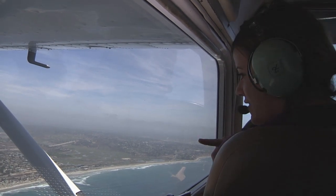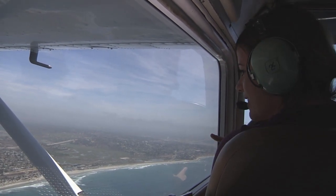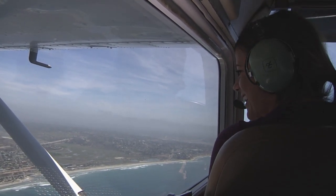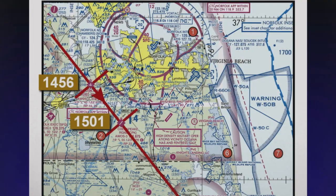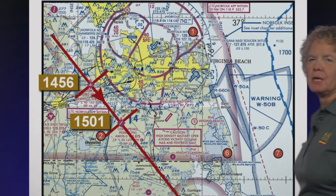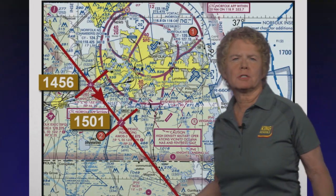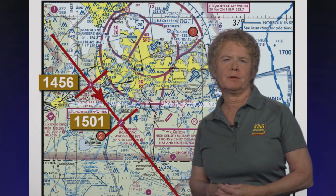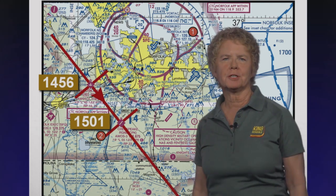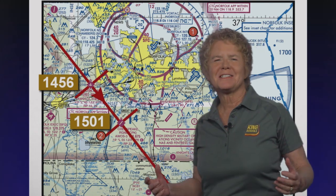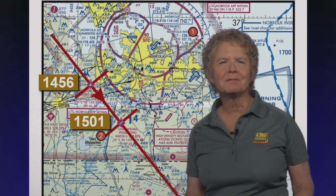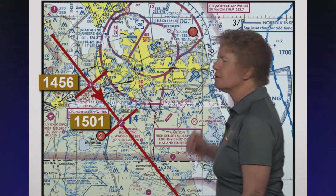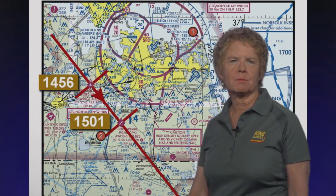This airplane sure looks like it's on a fun cross-country. So how do we figure out our own ground speed on a cross-country flight, and what time we're going to arrive at the destination? That's easy enough. Let's take a look at this chart and figure out that information.